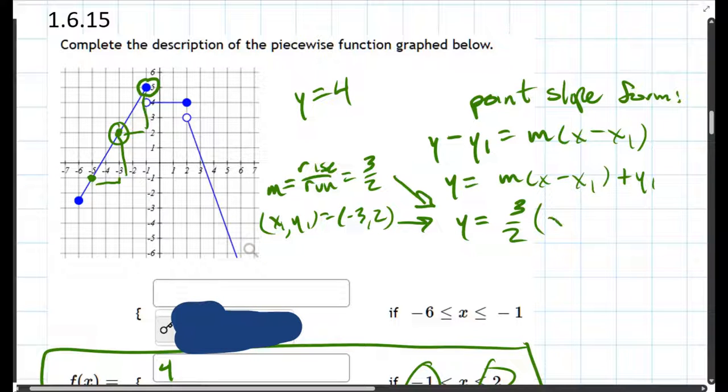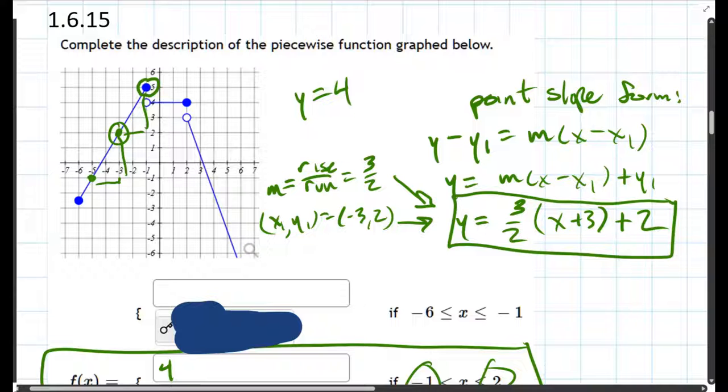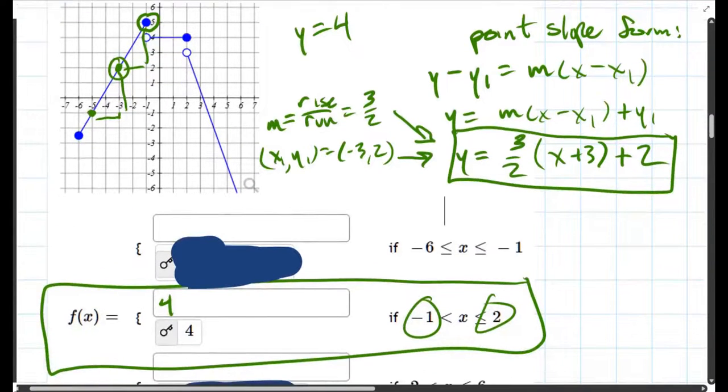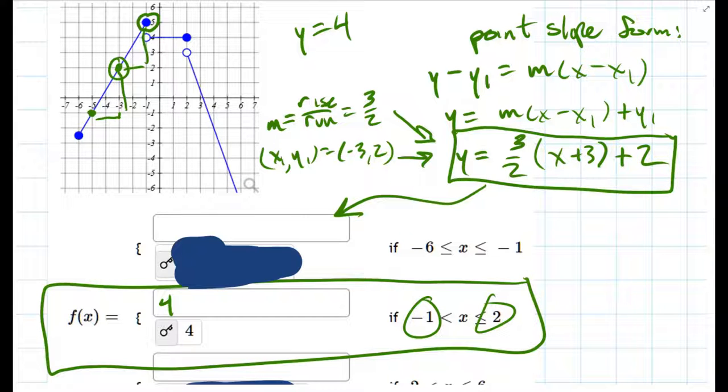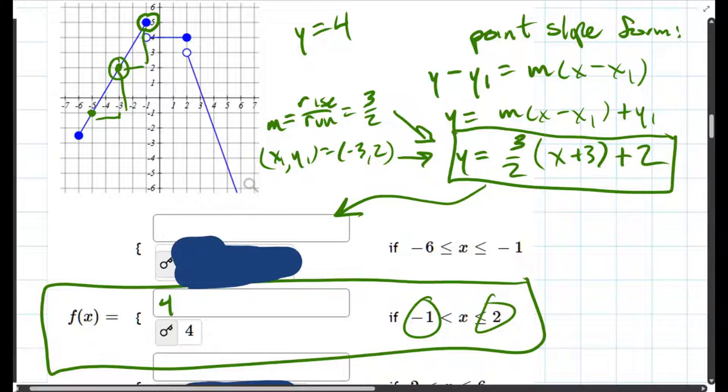Here's our slope, minus x1 is minus negative three, plus two. And you could distribute this right here, but it's not really going to get much better. So I think this is a fine solution right here. Let's see. We need to plug that in right here. So that should be this line. Again, it's negative six to negative one, which is exactly the x-coordinates that we were looking at.